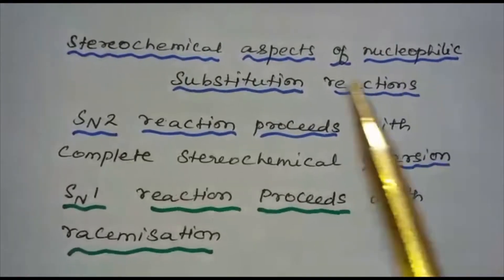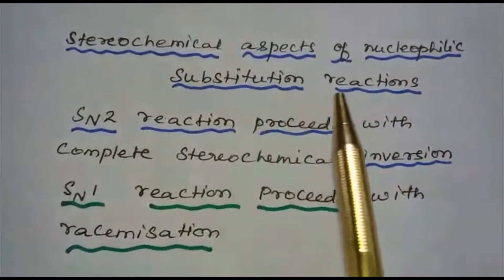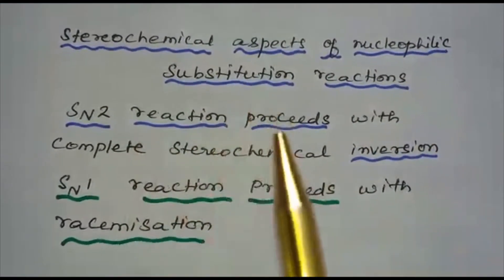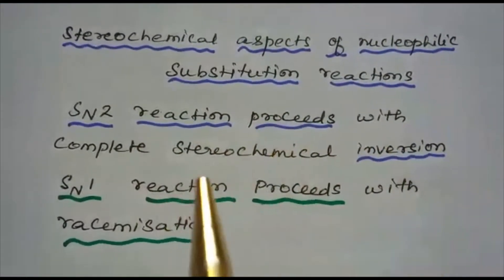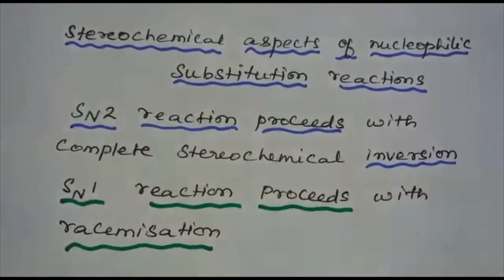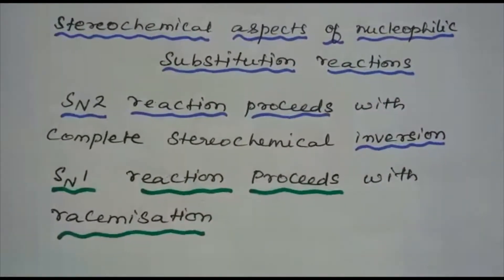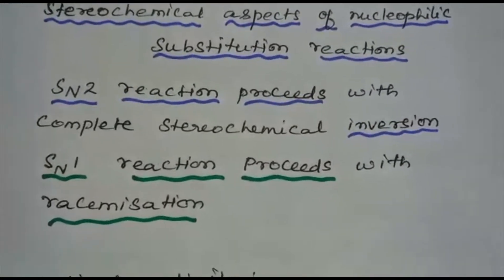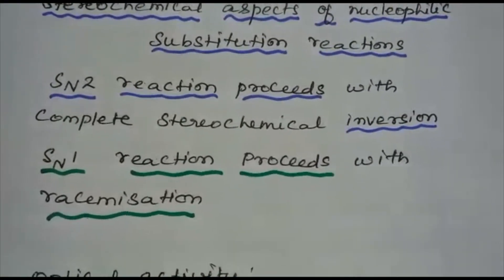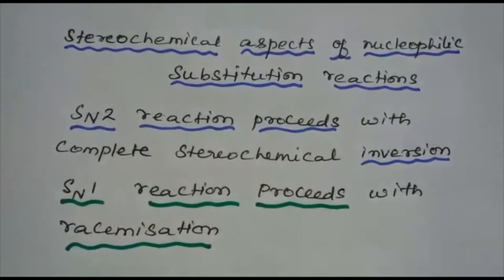Let us discuss the stereochemical aspects of nucleophilic substitution reactions. SN2 reaction proceeds with complete stereochemical inversion. SN1 reaction proceeds with racemization. To understand this concept, we need to learn some basic stereochemical principles and notations such as optical activity, chirality, retention, inversion, and racemization. Let us discuss them one by one.